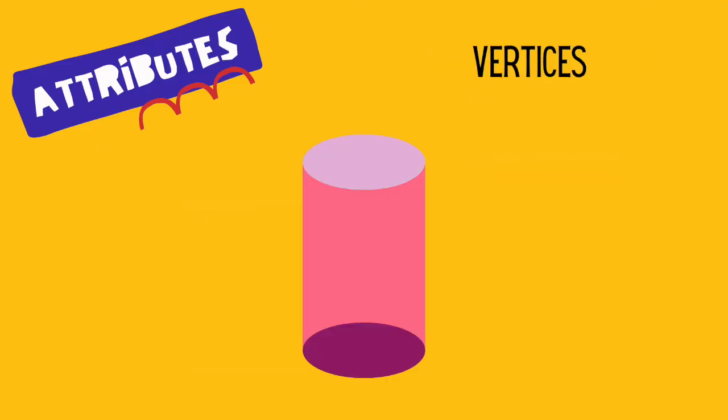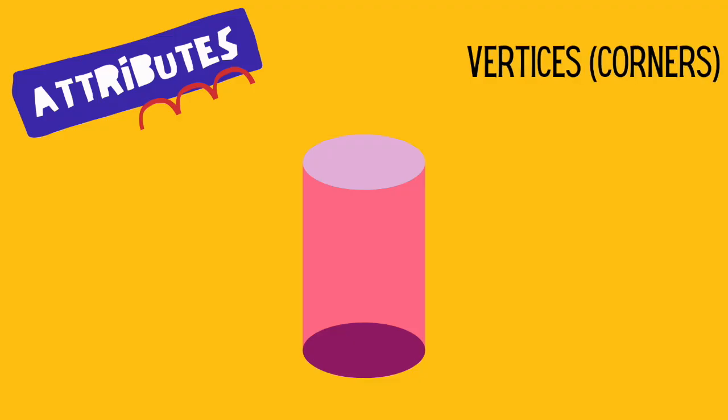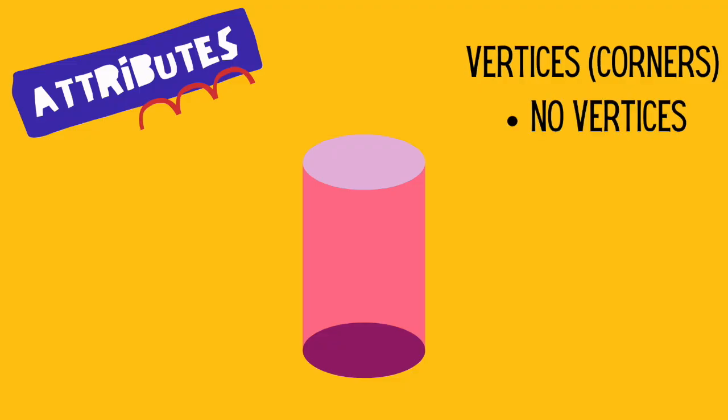Finally, let's talk about vertices. Remember, vertices is a fancy word for corners. Do cylinders have any corners? Nope. That also means they have no vertices.